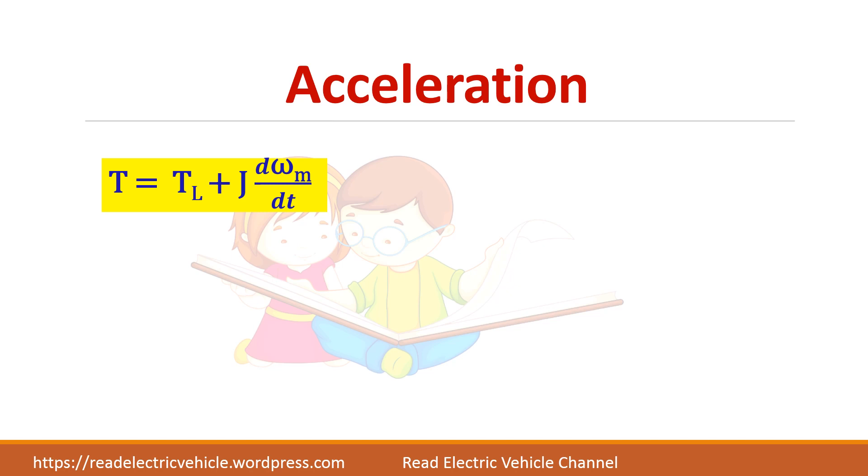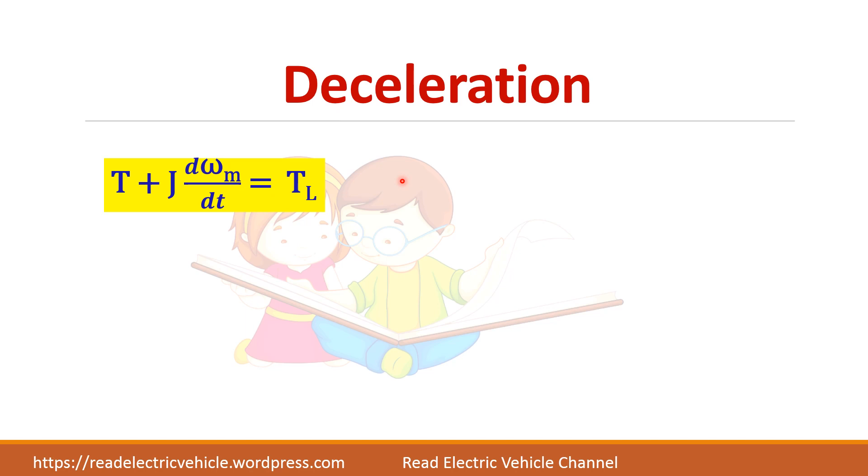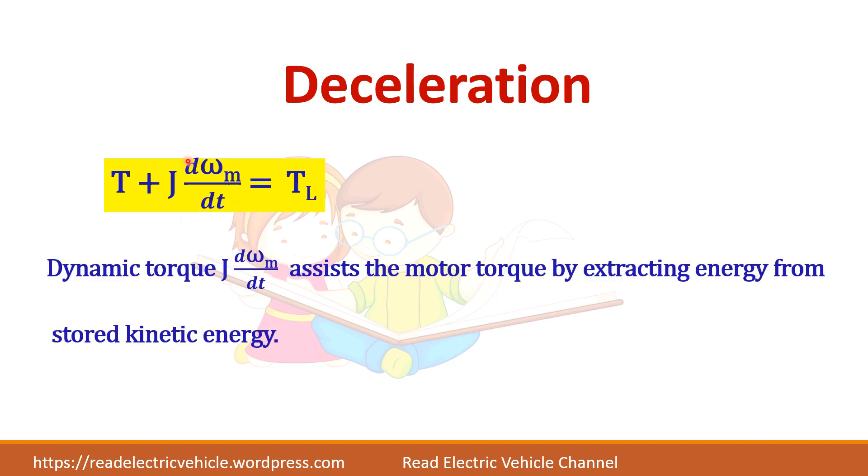So what happens during acceleration? The energy associated with this dynamic torque will be stored in the form of kinetic energy. What is kinetic energy? It is the energy in motion. So kinetic energy is given by ½Jωm². During deceleration this will change its sign. So this dynamic torque will help the motor torque by extracting energy from the stored kinetic energy. So it has changed its sign, so I have written as T plus this term equals load torque.